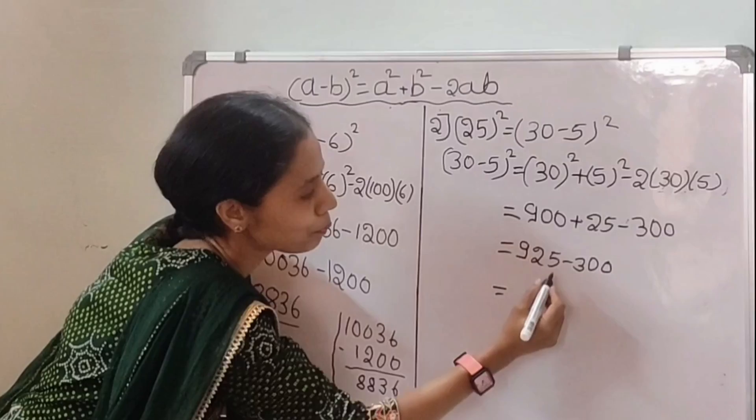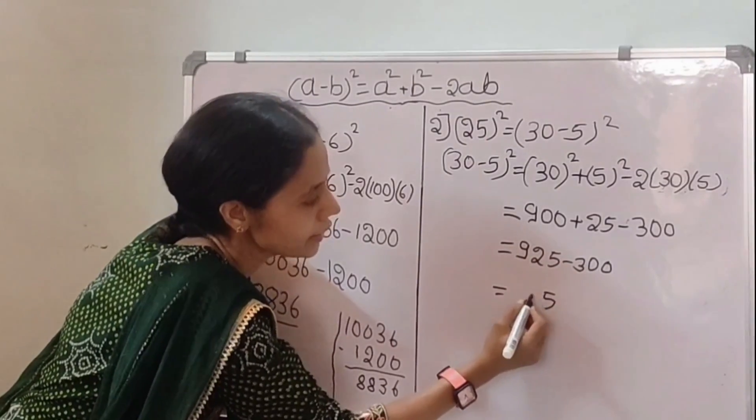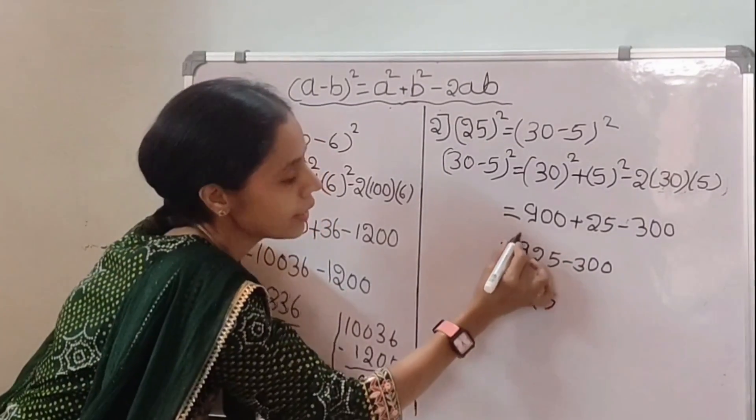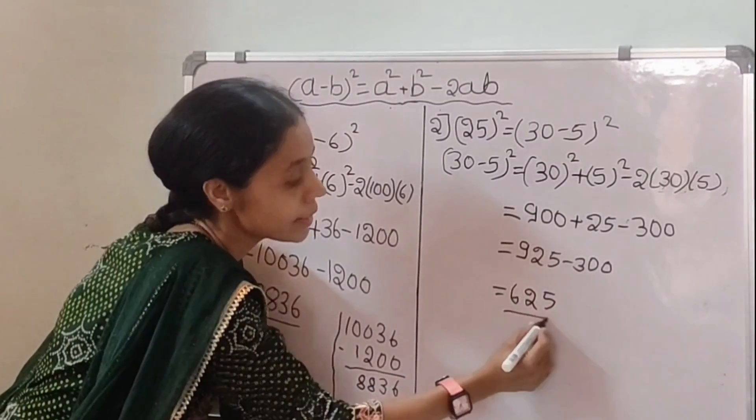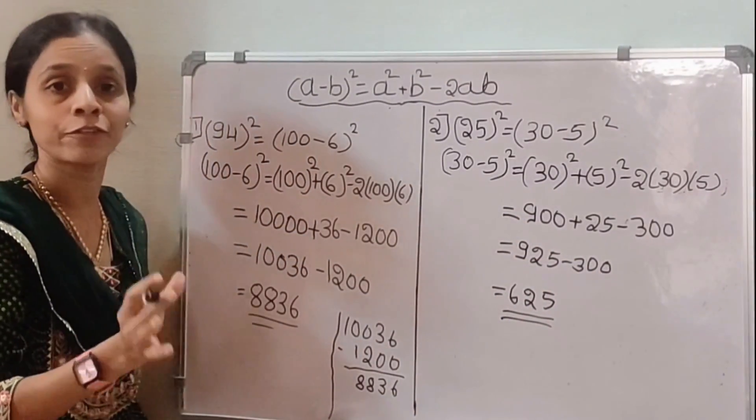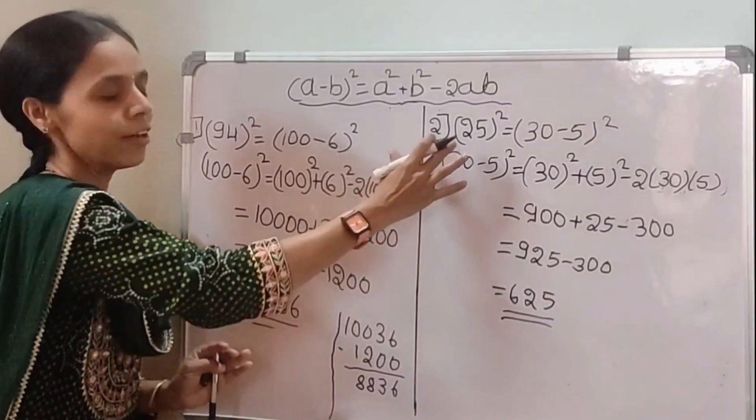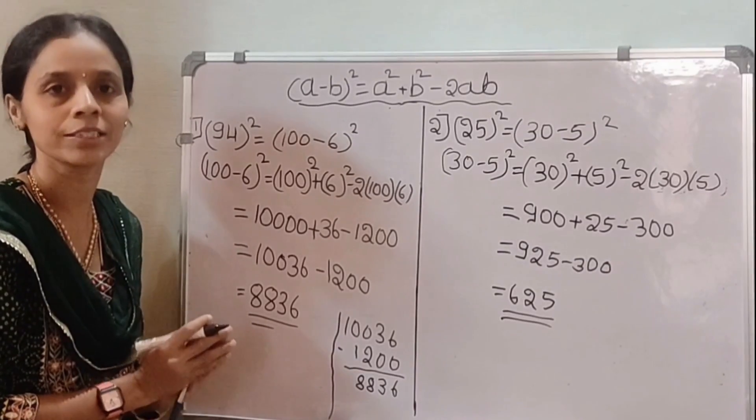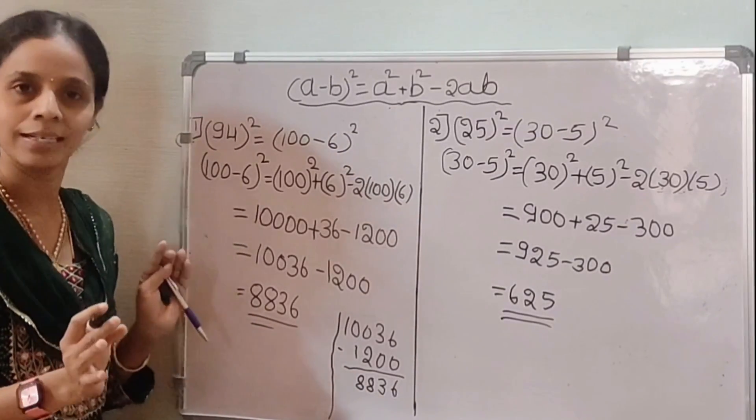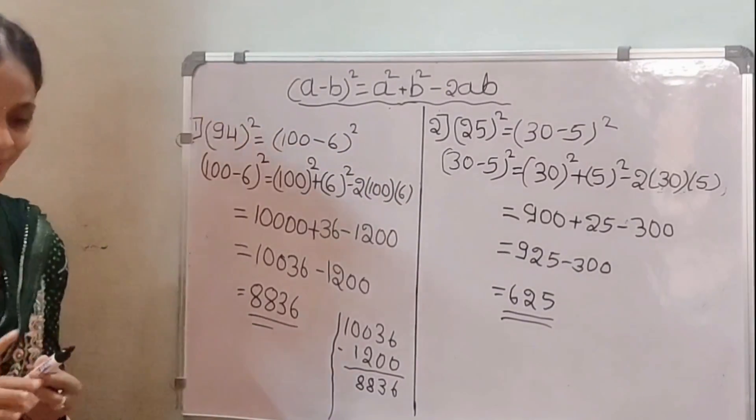Subtract these two. 925 - 300. 9 - 3 is 6. 625 is the square of 25. It is very easy to find out the square of any numbers. Understood? Thank you. Thank you.